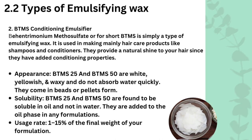The next on our list is BTMS conditioning emulsifier. This is mostly used in hair products because of its conditioning properties. It may be more expensive, but when used in conditioner it gives a perfect effect. It is also used in deep conditioners and shampoos, and can also be used in creams or butters where you want conditioning properties. BTMS 50 and BTMS 25 are the two types available.